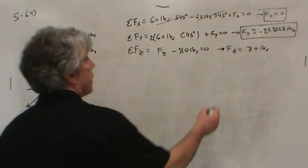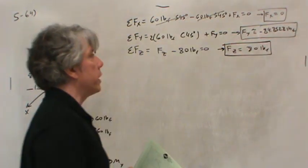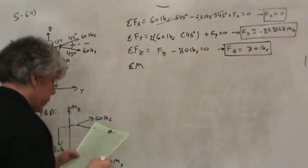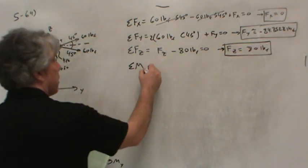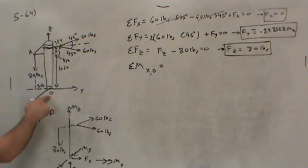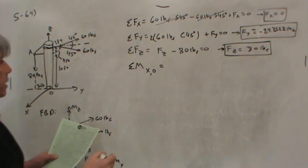So, we've got the forces at the base of the pole in the X, Y, and Z direction. But to get the moments, we'll have to sum moments at the base of the pole. So, I'm going to sum moments about the X-axis at the origin O, or at the base of the pole. And I better come up with zero.